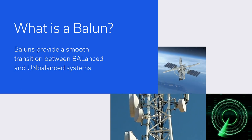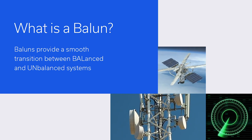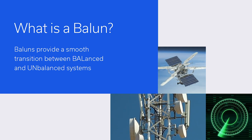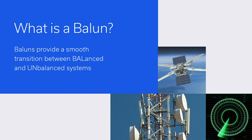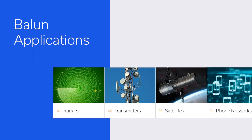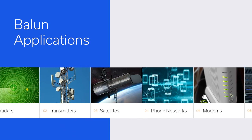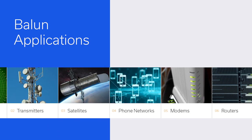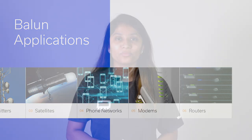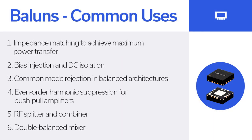So, what is a balun? Baluns are the most common RF devices used in modern communication systems to provide a smooth transition between balanced and unbalanced systems. Baluns are present in radars, transmitters, satellites, in every forward network and probably in most wireless networks, modems, and routers used in a home. In general terms, the balun transformer has some common uses. When we think of baluns, usually the following uses come to mind.